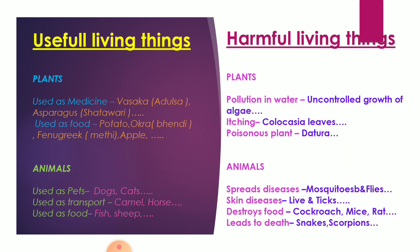There are also some harmful living things. Plants which pollute water include the uncontrolled growth of algae. Plants which cause itching include colocasia leaves. Plants which are poisonous include datura, which is very poisonous for living things. Harmful animals include mosquitoes and flies, which spread diseases. Some cause skin diseases, like lice and ticks. Some destroy food, like cockroaches, mice, and rats. And some animals can even cause death, like snakes and scorpions.